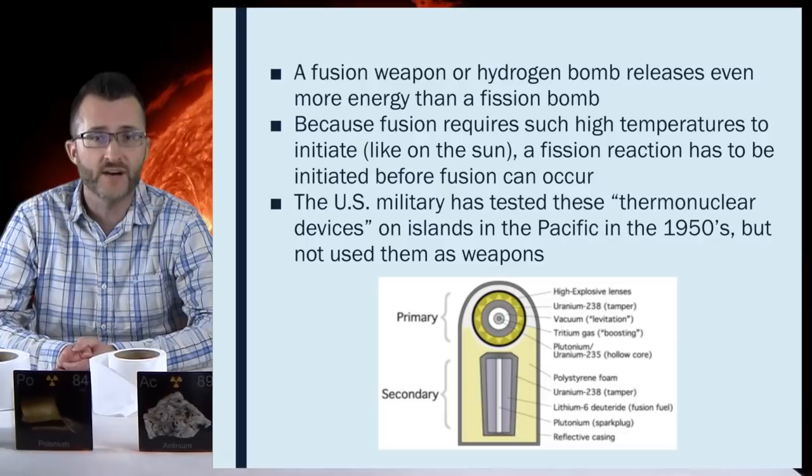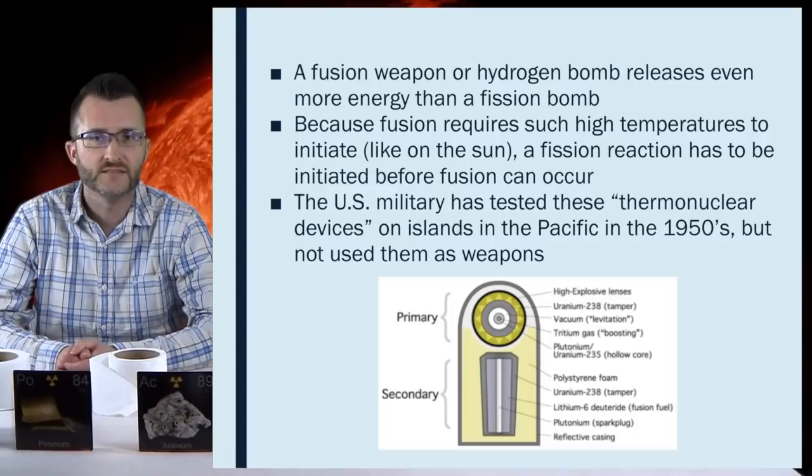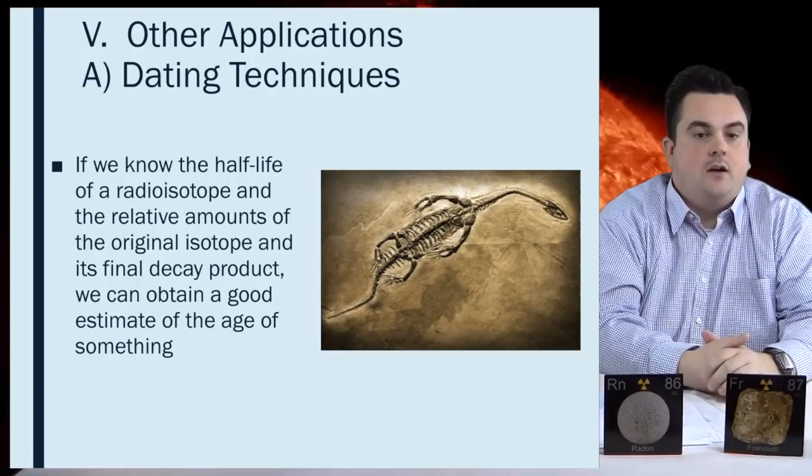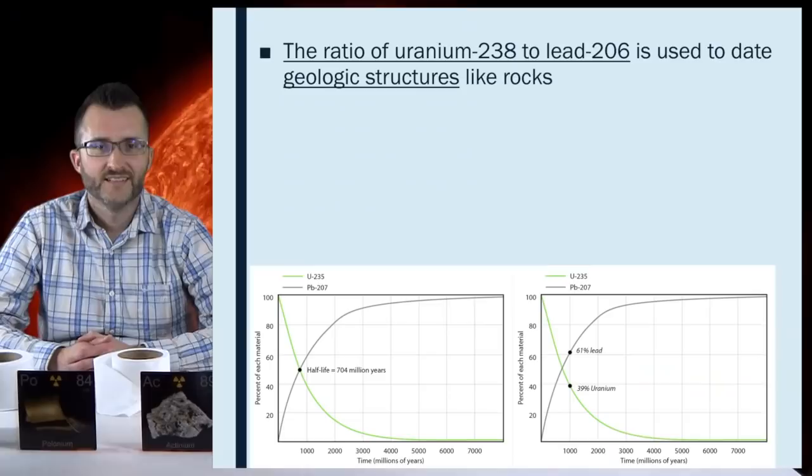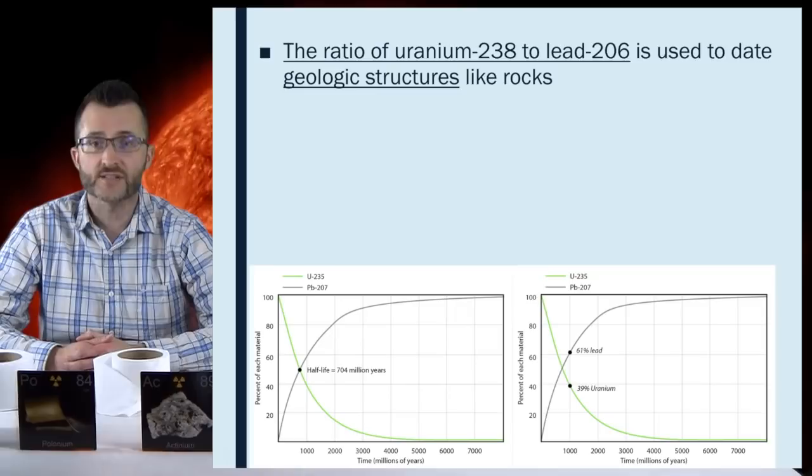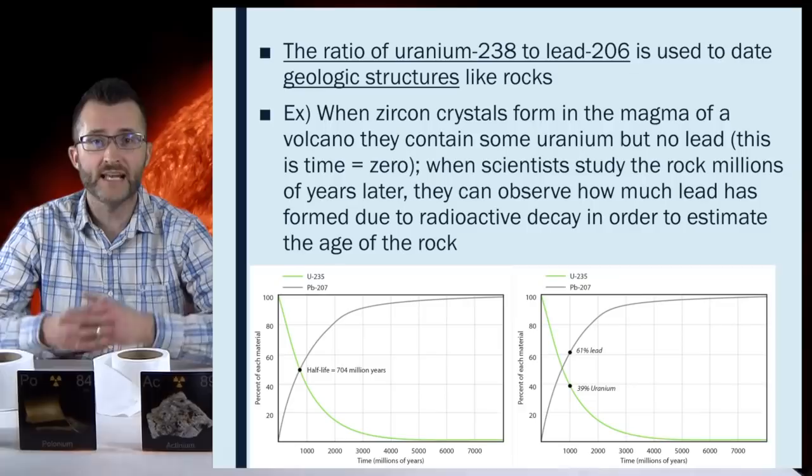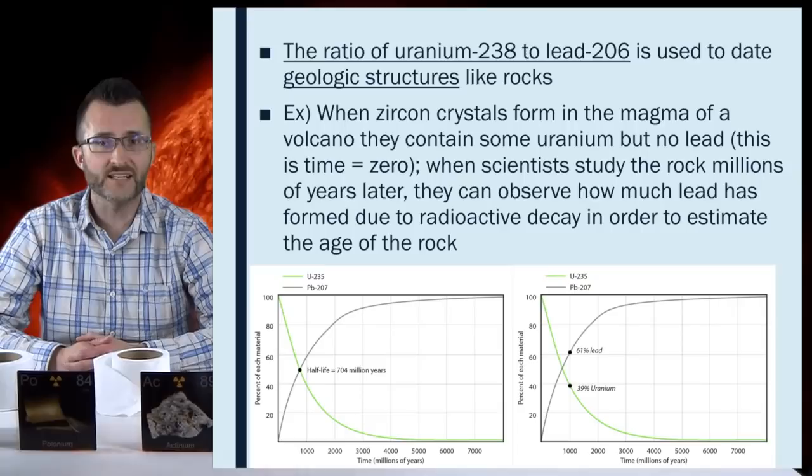Other applications. Dating techniques. If we know the half-life of a radioisotope and the relative amounts of the original isotope and its final decay product, we can obtain a good estimate of the age of something. The ratio of uranium-238 to lead-206 is used to date geologic structures, like rocks. Example, when zircon crystals form in the magma of a volcano, they contain some uranium but no lead. This is time equals zero. When scientists study the rock millions of years later, they can observe how much lead is formed due to radioactive decay in order to estimate the age of the rock.